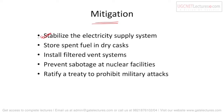Mitigations for nuclear disaster include: first, stabilizing the electricity supply. Nuclear energy is stored in cool places because it is very hot; if electricity fails, the temperature increases and radioactive waves are released. Second, store spent fuel in dry dark casks — if fuel is kept dry, there is less chance of it spreading.